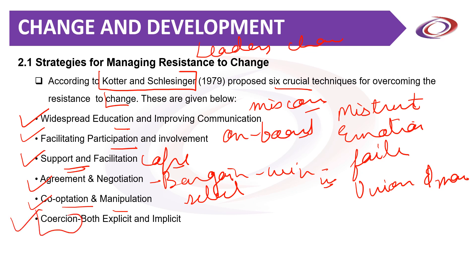The sixth and final technique is coercion — both explicit and implicit. This is the last resort, as it can damage trust and morale. Coercion should be used only when all other methods have failed. These strategies can help senior management overcome resistance, but they may change the industrial relations atmosphere and should be taken only after carefully weighing and analyzing the pros and cons of the situation.